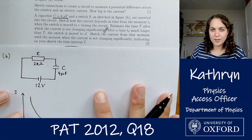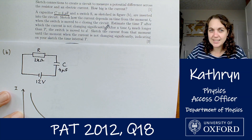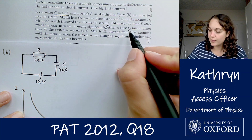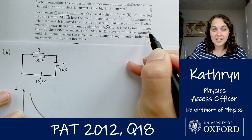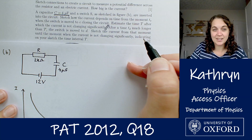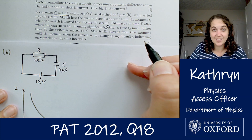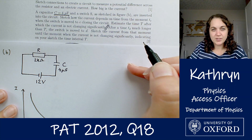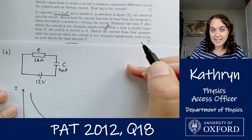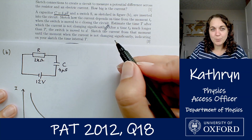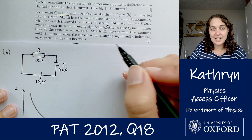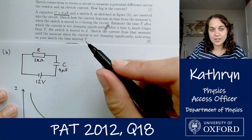Then what's the second part of this question? After a time Td much longer than T, we can assume that the capacitor has fully charged — nothing is changing anymore. At that point the switch is moved to D. Sketch the current from that moment until the moment when the current is not changing significantly, indicating on your sketch the time interval T.